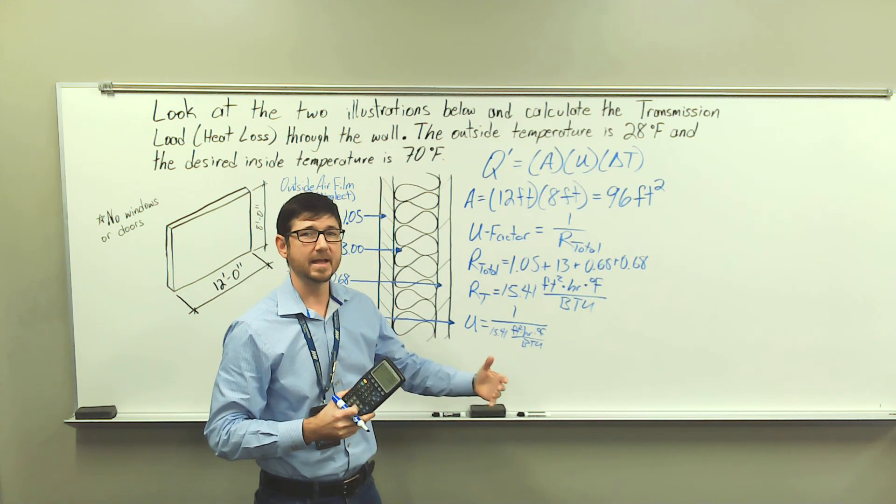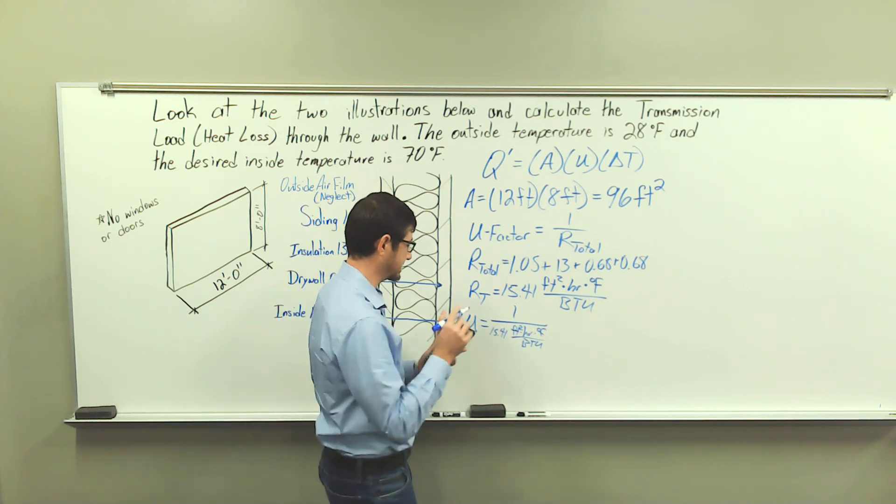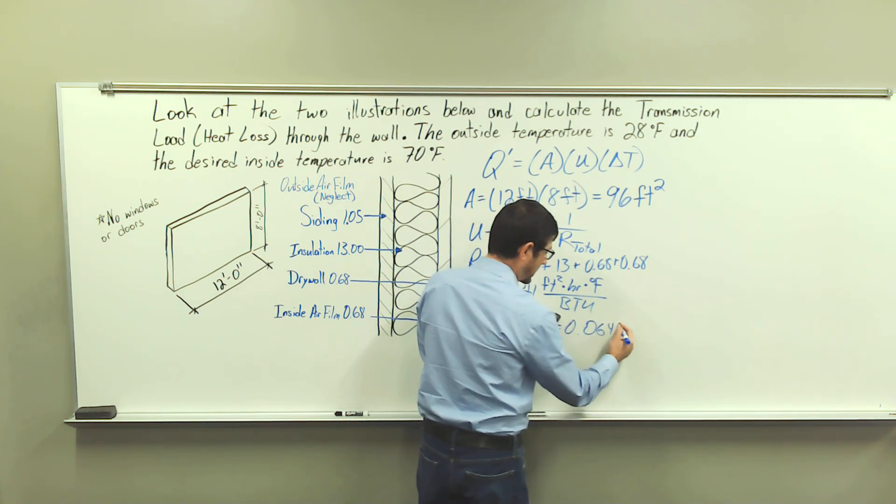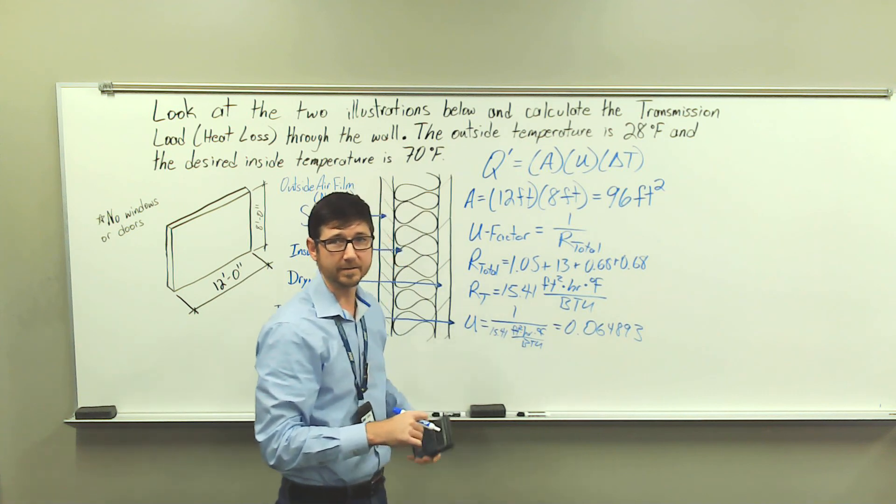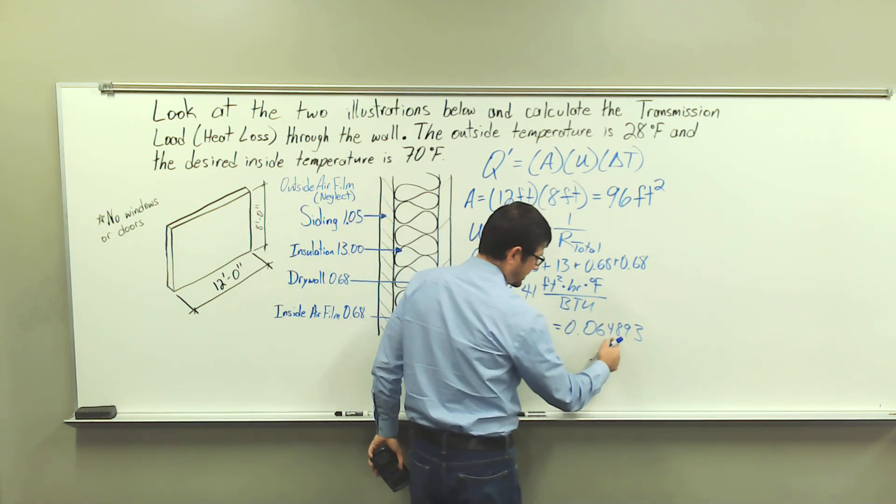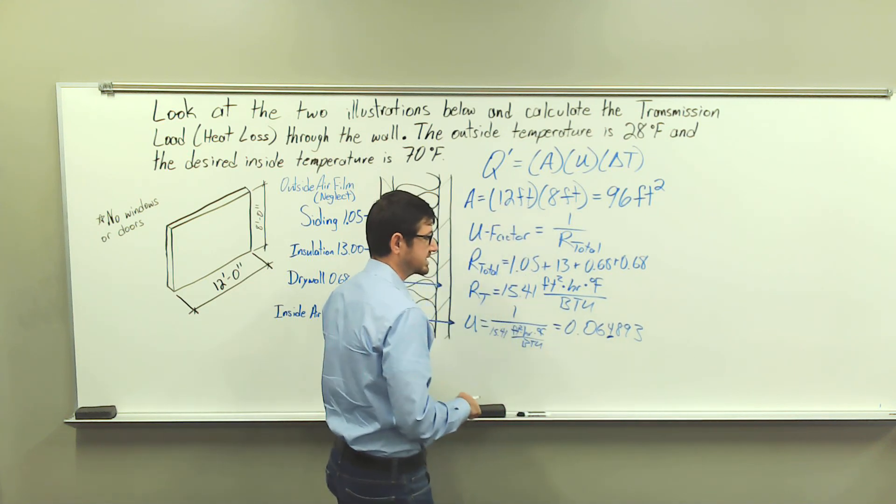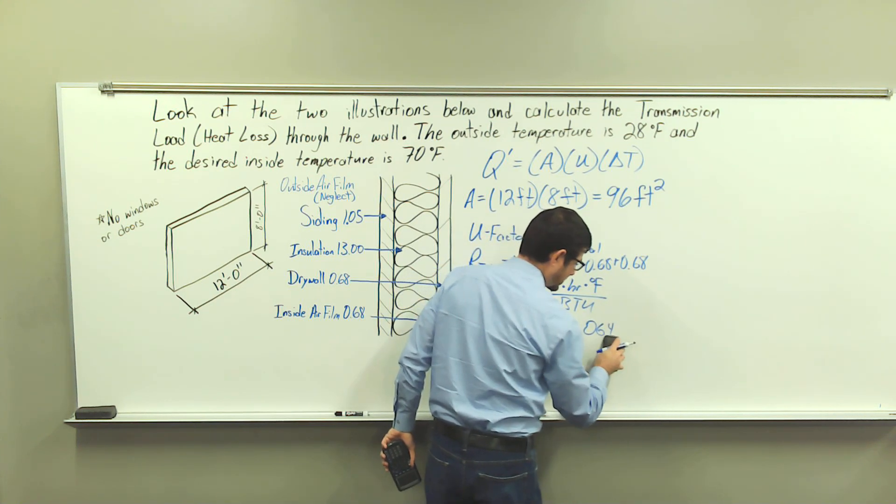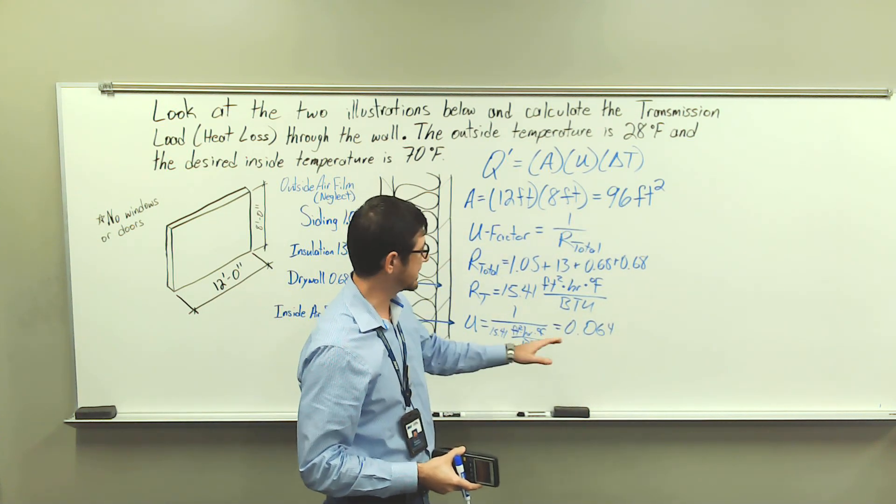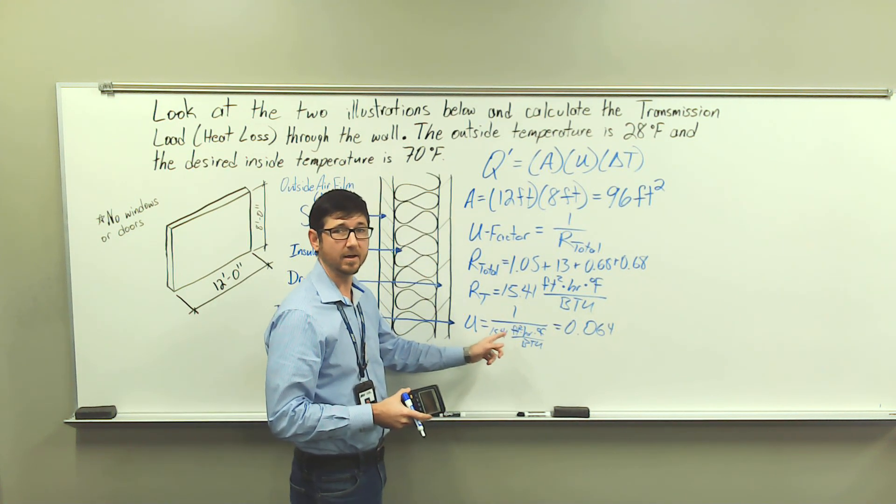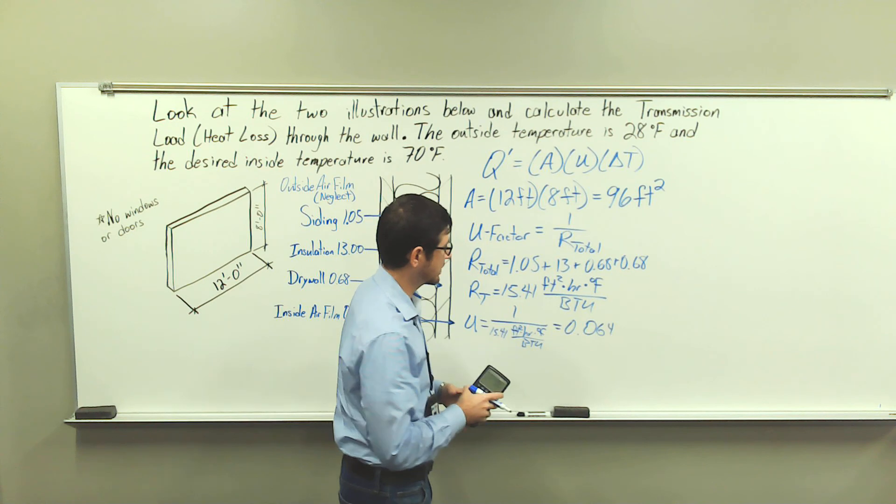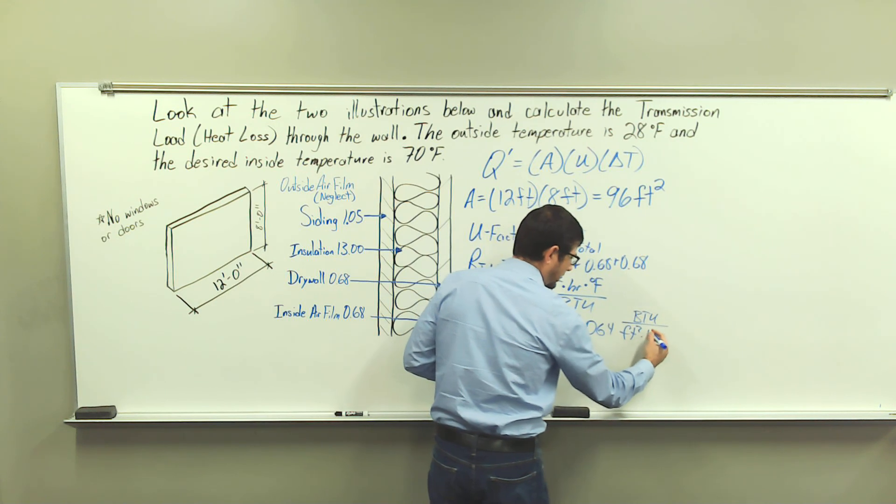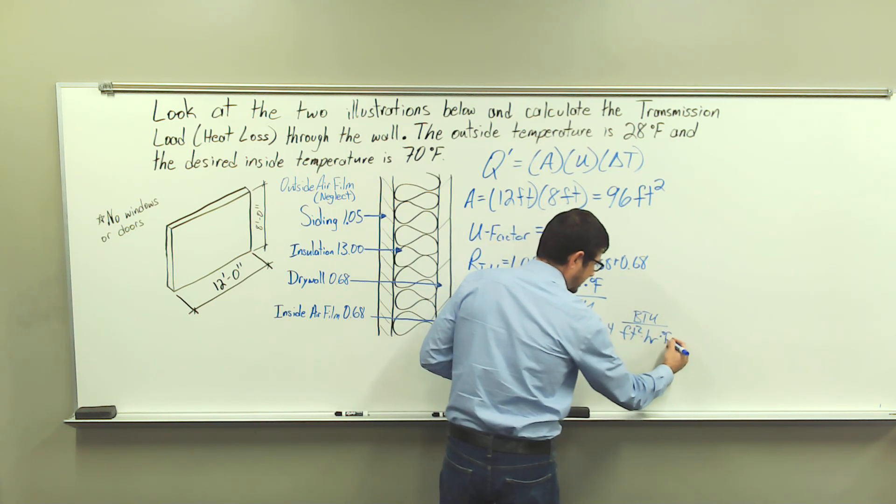Okay, so my value here that I see on my calculator is 0.064893, and it keeps going on. But since we're going to truncate to the thousandths place, we're just going to keep this value, the 4, and we're going to remove the rest. So my value is going to be 64 thousandths. But we're taking the inverse of our total R value, so our units are going to be British thermal unit per foot squared hour degree Fahrenheit.